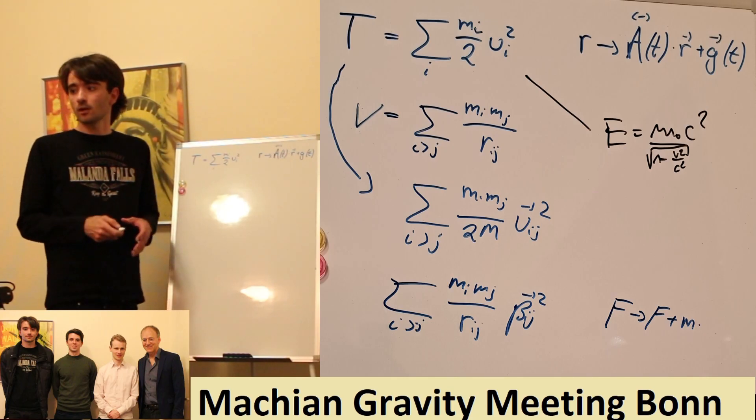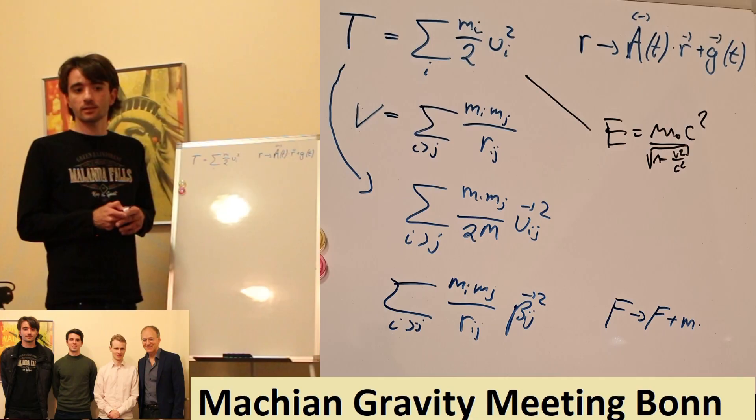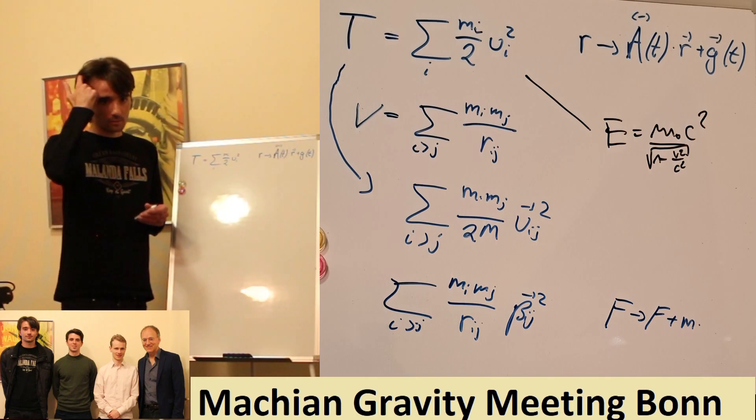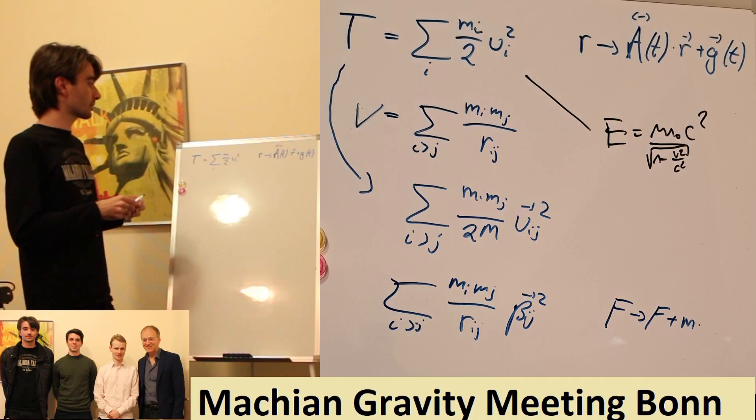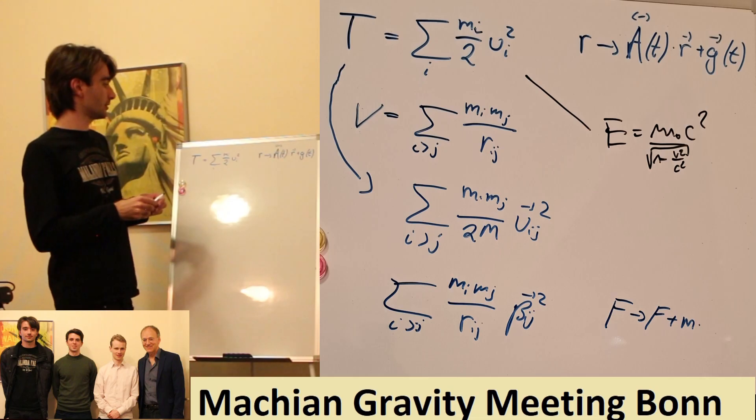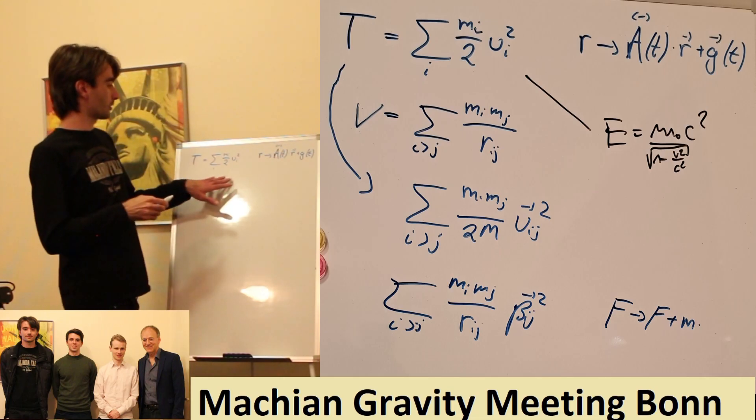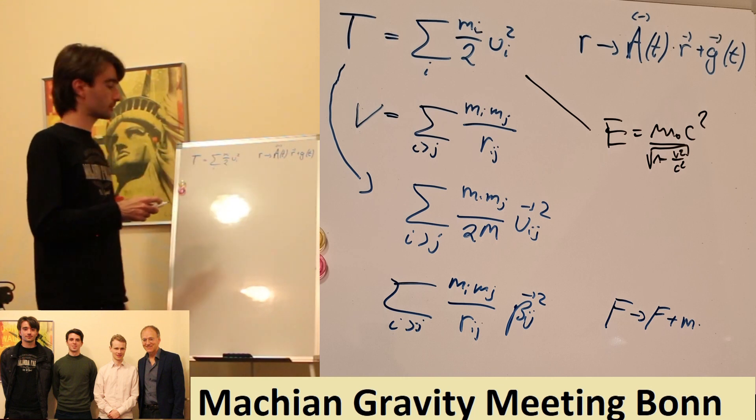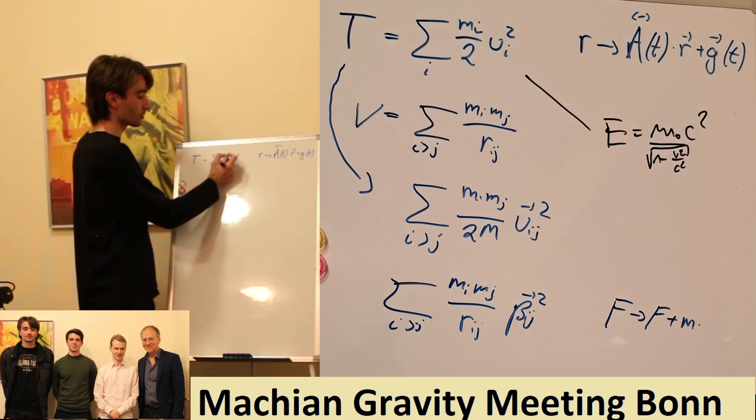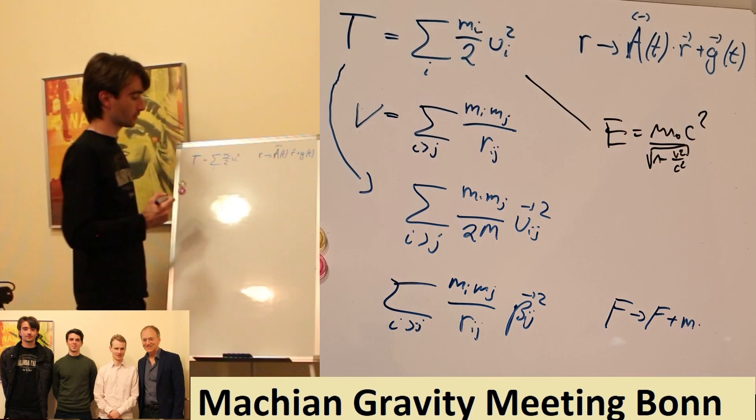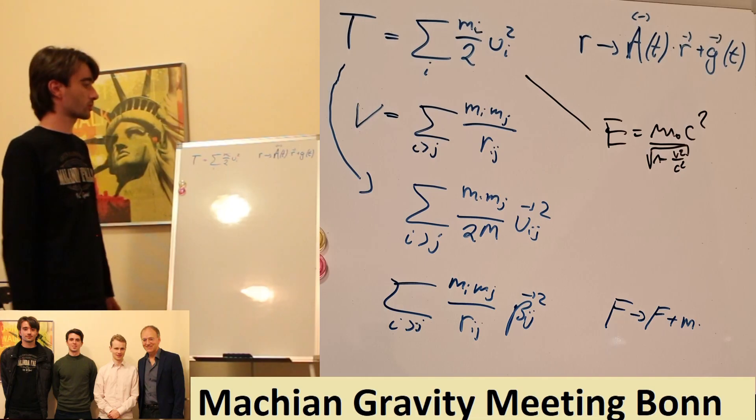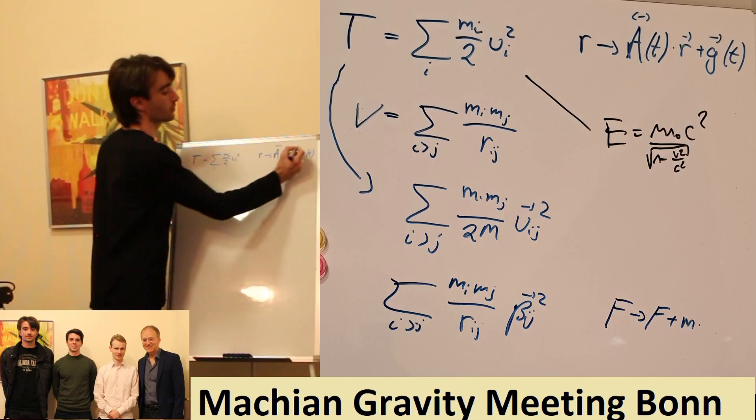And this is exactly why Newtonian dynamics is unable to account for the fictitious forces, because the fictitious forces just come out if you make Lagrange completely invariant under these transformations. Then it produces the fictitious forces. Otherwise you have to postulate them when you go into a rotating or an accelerating frame.